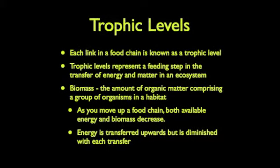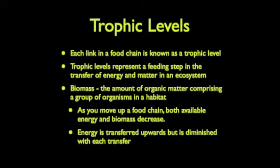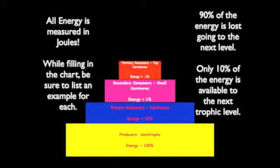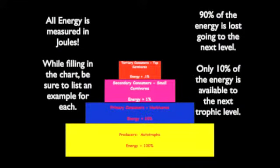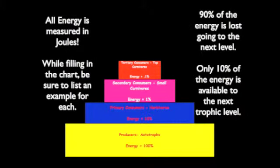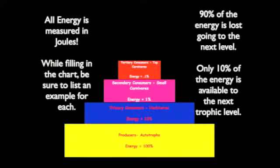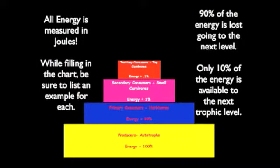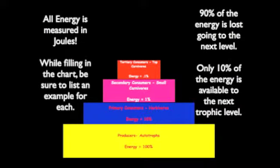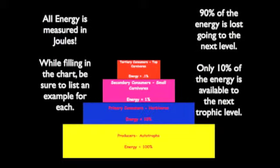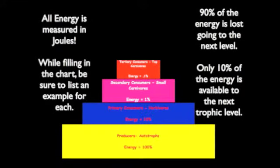On the next slide we're going to be filling in a chart with some of this information. All energy is measured in joules — 90% of the energy is lost going to the next level, and only 10% is available to the next trophic level. At the very bottom, the yellow box contains your producers, your autotrophs — their energy contains 100%. Examples of producers are your grasses and your plants. Then we have the primary consumers, which are going to be your herbivores. Notice that their energy only contains 10% — 90% has been lost. Examples include your bunnies, your cows, your horses, and so forth.